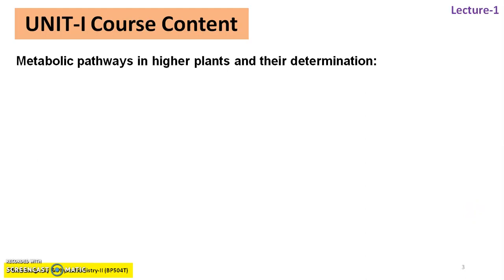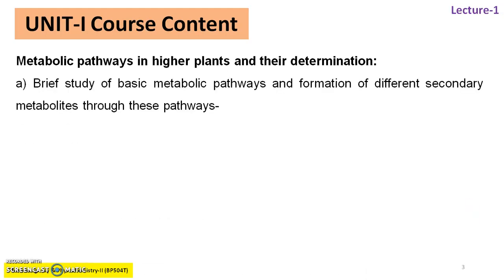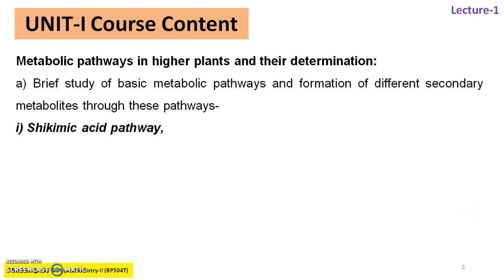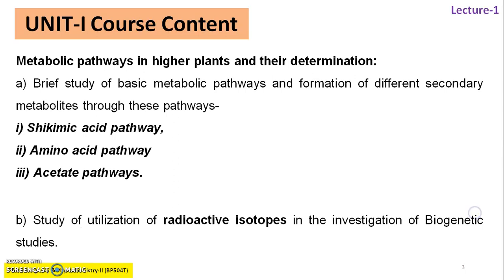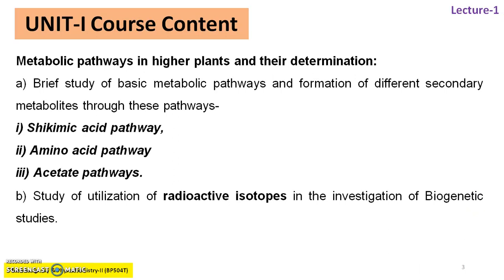The course contains Metabolic Pathways in Higher Plants and the Determination. It consists of two parts. Part A: brief study of basic metabolic pathways and formation of different secondary metabolites through these pathways, wherein we are going to study shikimic acid pathway, amino acid pathway, and acetate pathway. Part B comprises study of utilization of radioactive isotopes in the investigation of biogenetic studies.